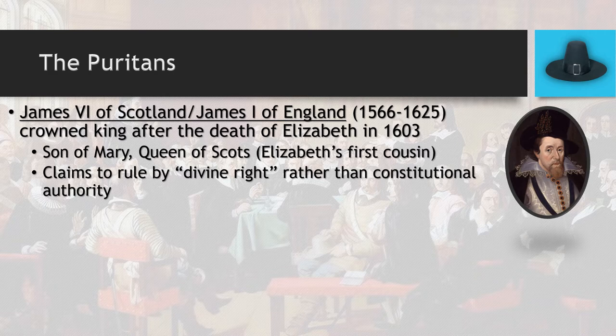James the First because he is the first king of England by that name — Scotland had already had five other Jameses before. Incidentally, if you look at the Union Jack flag — the current flag of Great Britain — you'll notice it's actually an overlay of the Scottish flag, which is a white X on a blue field, overlaid with the English flag, which is a red cross on a white field. That's why the Union Jack looks the way it does. James is the son of Mary Queen of Scots, who is Elizabeth's first cousin, making him a first cousin once removed.